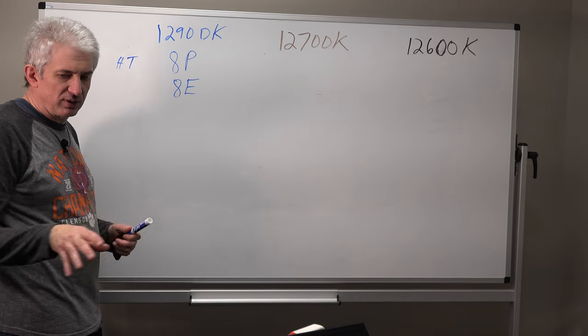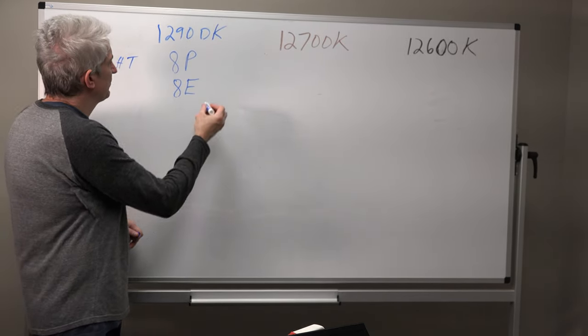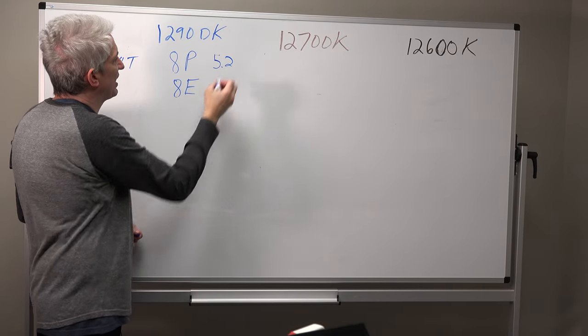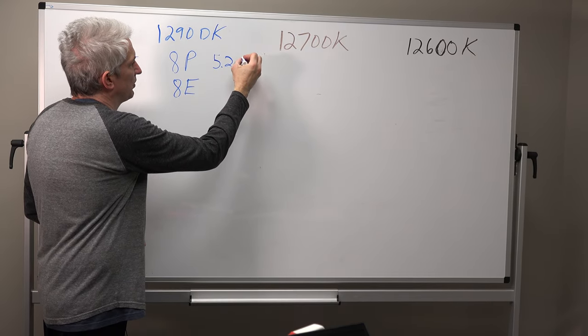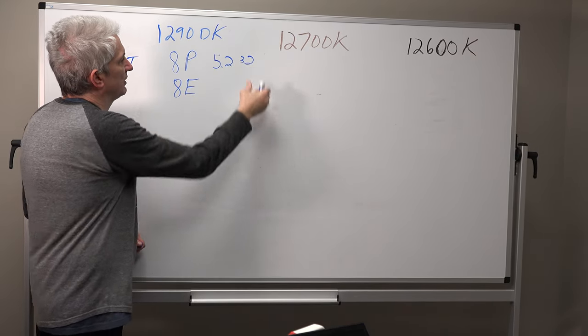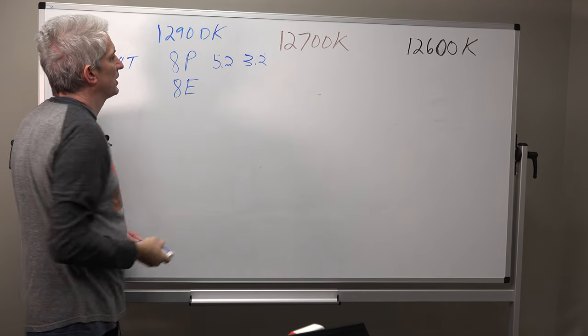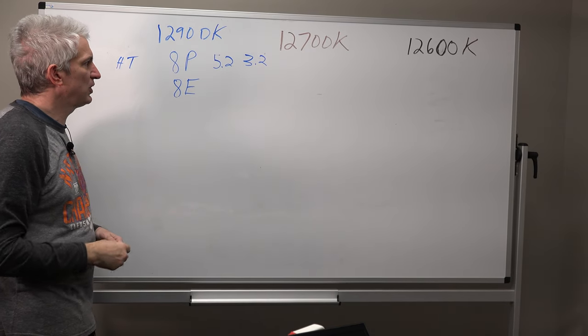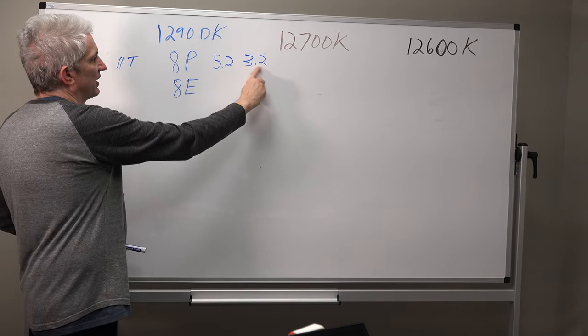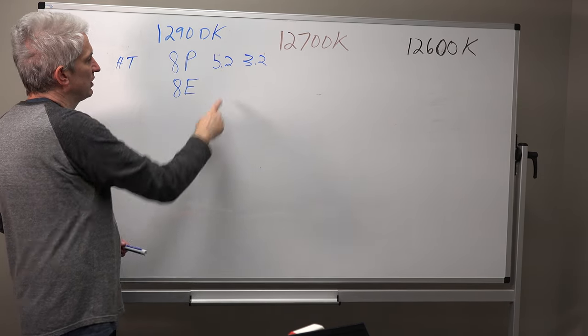Now, for example, I'm looking at some notes here because I can't memorize all this stuff. The max turbo frequency of the P cores is 5.2 and the base frequency is 3.2. So when they're just sort of idling, not doing a whole lot or doing some nominal work, you're going to see something like this. When you're playing a game, you're going to see something closer to this.